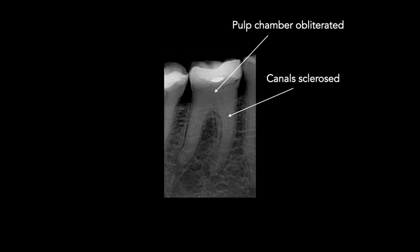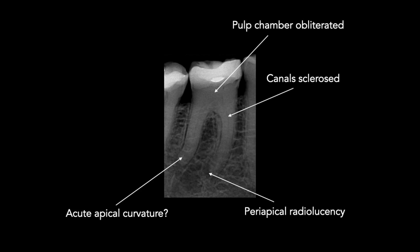There's a periapical radiolucency at the tip of the mesial root, which tells us that there is very likely to be a patent root canal that is undoubtedly infected. At the apex of the distal root there appears to be an apical curvature that is quite acute, and this is something to bear in mind when tapering the root canal. We also need to know the depth between the cusp height and the pulp floor. This can be measured from the digital radiograph and is a good indicator of how deep we need to go in order to find the orifices without risking perforation, especially in the furcation region.